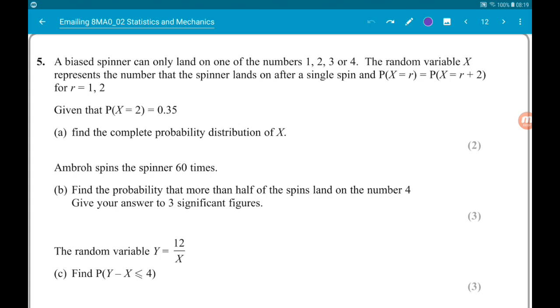A biased spinner can only land on the numbers 1, 2, 3, and 4. The random variable X represents the number that the spinner lands on after a single spin, and the probability of X equals r is equal to the probability that X equals r plus 2 for r equals 1 and 2. So that means the probability of it landing on 1 is the same as the probability of it landing on 3, and the probability of it landing on 2 is the same as the probability of it landing on 4.